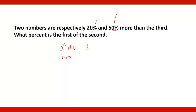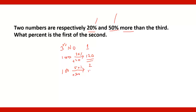The first number is 20 percent more than the third. 20 percent of 100 is 20, so plus 20 gives 120 for the first number. The second number is 50 percent more than the third. 50 percent of 100 is 50, so plus 50 gives 150 for the second number.